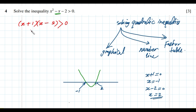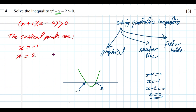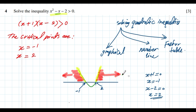To find the solution of the inequality, we identify the critical points — the x-intercepts at x equals negative 1 and x equals 2. We look at where the curve is positive, meaning above 0. The curve is positive when x is below negative 1, moving to the left, or when x is above 2, moving towards positive infinity.